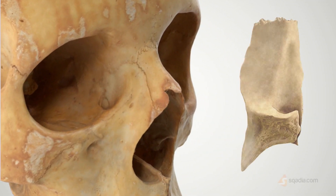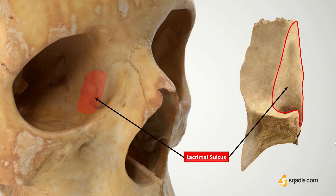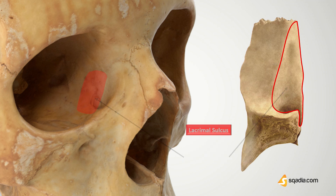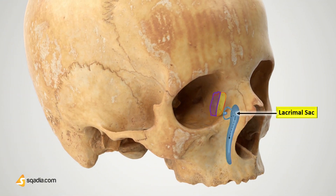Zooming into the anterior part, we can see that it is related to the lacrimal sac and the lacrimal canaliculi. The posterior part, which is flattened, makes up the posterior wall of the orbit. Moving back to the main features of the anterior side, we can observe a longitudinally positioned groove called the lacrimal groove or the lacrimal sulcus. This is basically a deep groove in front of the opening of the maxillary sinus. The inner margin of this sulcus unites with the frontal process of the maxilla, forming the lacrimal fossa. The upper part of the lacrimal fossa accommodates the lacrimal sac, whereas the lower part contains the nasolacrimal duct.